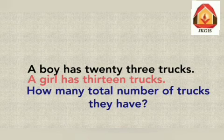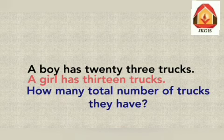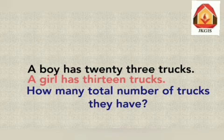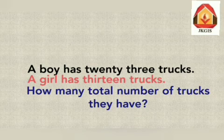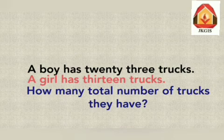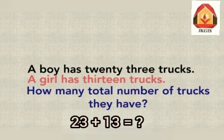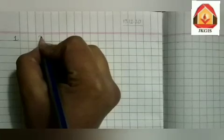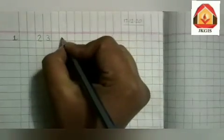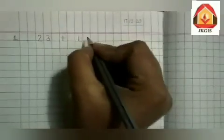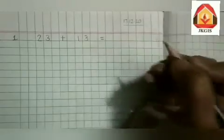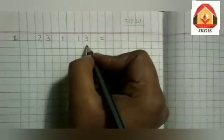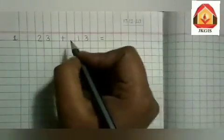Here you can see there is both masculine and feminine gender and they both have trucks. We have to find out the total number of trucks they have and we know a truck is a land transport. So let us find 23 plus 13. Let us first add in a horizontal way. 23 plus 13 is equal to?